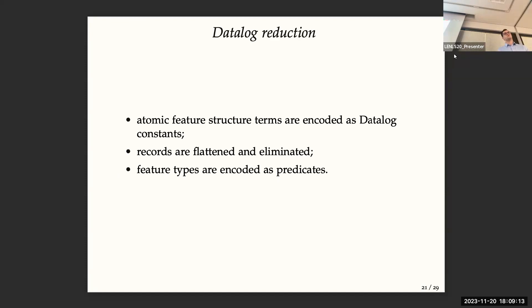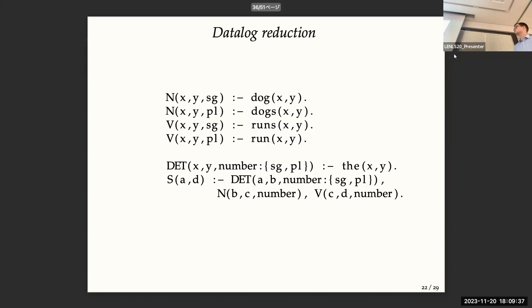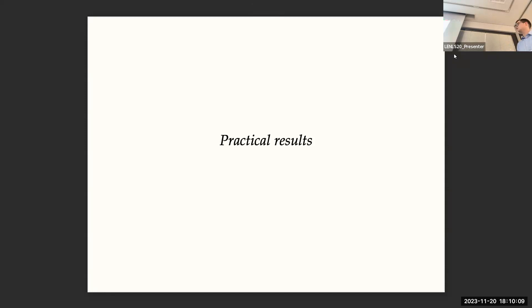It's also possible to reduce the datalog reduction by using several principles. So the atomic feature structures are encoded as datalog constants. And all the records will disappear, we flatten them out and eliminate them. And feature types will be encoded as predicates. So for example, we have a very simple target example. So here we introduce basic feature structures, singular in this example. And we also add type notation for restricting the variables. And it works also for restricting grammars and more general versions.